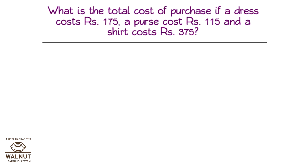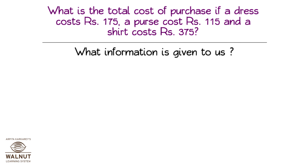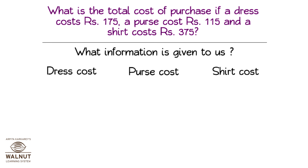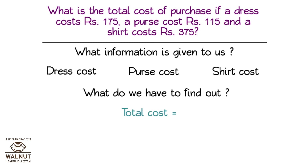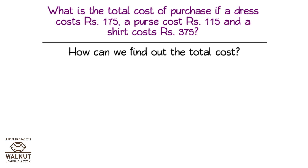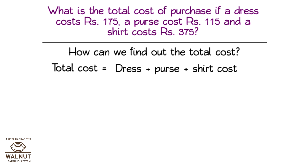What is the total cost of purchase if a dress costs Rs. 175, a purse costs Rs. 115, and a shirt costs Rs. 375? What information is given to us? The dress cost, the purse cost, and the shirt cost. What do we have to find out? The total cost. This is a problem of addition. Total cost is equal to the cost of the dress, plus the cost of the purse, and the cost of the shirt.